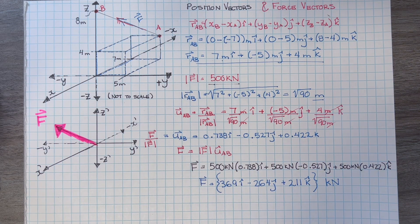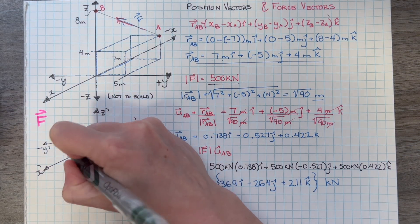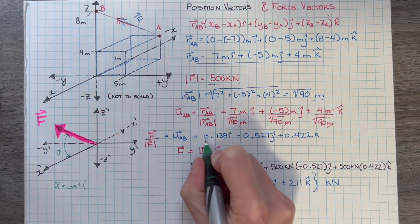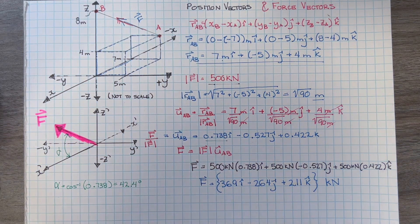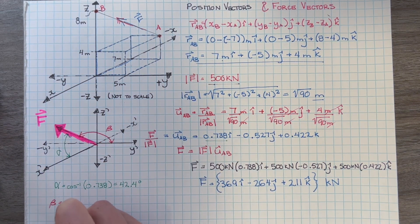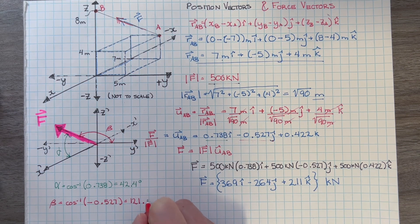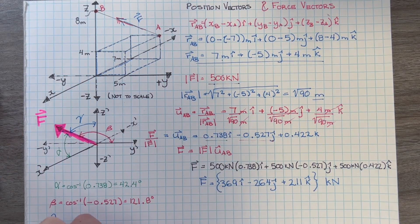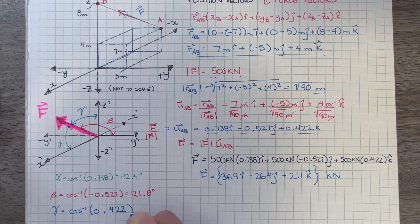Our unit vector can also be used to solve for our coordinate direction angles. These are measured between our vector's direction and the positive axis of a localized coordinate system at our vector's head. Let's practice with three more problems.